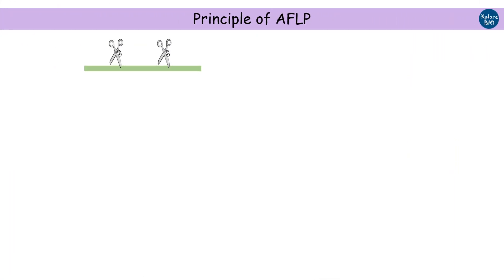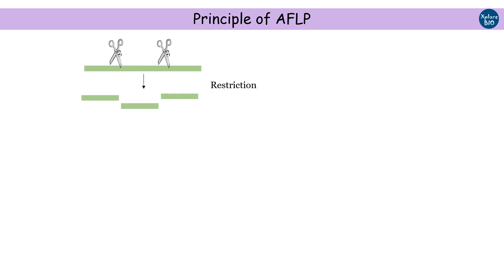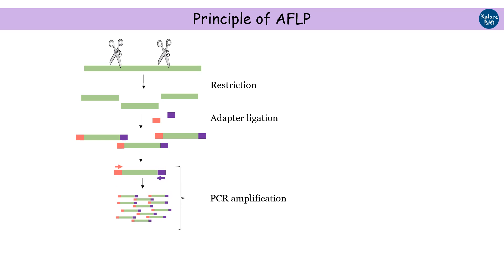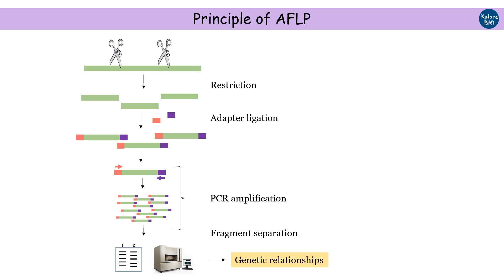AFLP involves the digestion of genomic DNA using restriction endonucleases, followed by adapter ligation and PCR amplification. The amplified products are visualized on high-resolution polyacrylamide gels or automated sequencers. The variation in the length of fragments is analyzed, which gives us an estimate about genetic relationships among individuals or variations.